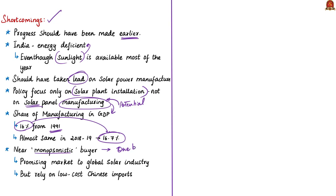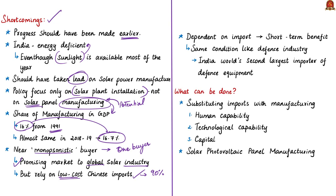India is regarded as one of the most promising markets for any industry, including the global solar industry. However, India is relying on low-cost Chinese imports, which accounted for 90% of Indian imports regarding solar technology. The author says these low-cost imports from China have weakened India's ambitions to develop its own solar technology suppliers. This dependency on imports is only of short-term benefit. If this continues, India's energy sector will be in the same condition as the defense industry — India is already the world's second largest importer of defense equipment due to enormous government spending on procurement.